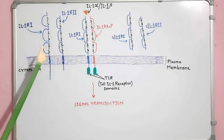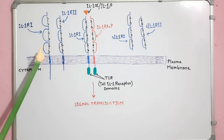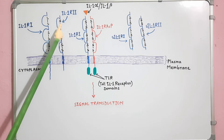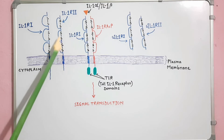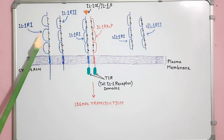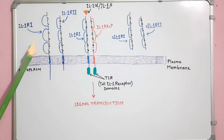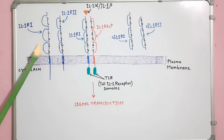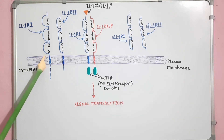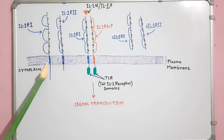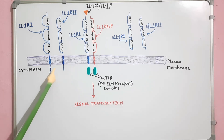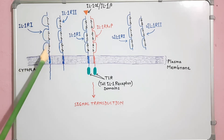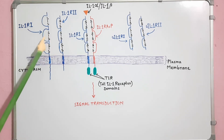Here I have drawn diagrams of the IL1R1 receptor. The type 1 receptor is an 80 kilodalton transmembrane protein. The extracellular region is 552 amino acids long, the transmembrane region is 22 amino acids long, and it has a long cytoplasmic tail of 213 amino acids. The extracellular ligand-binding region consists of three immunoglobulin-like domains.